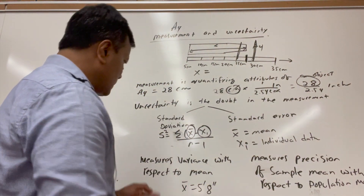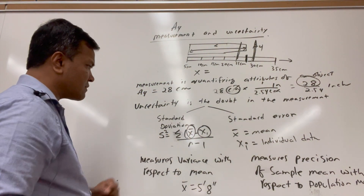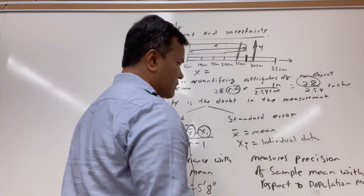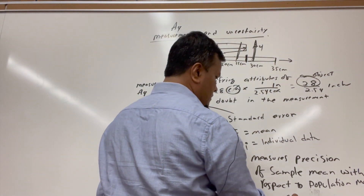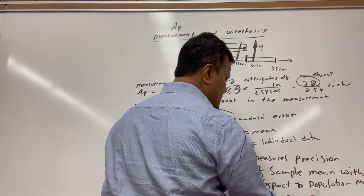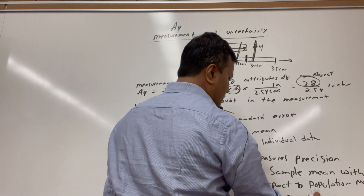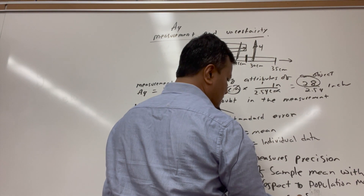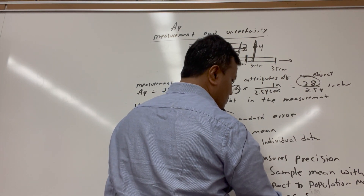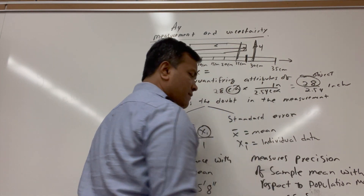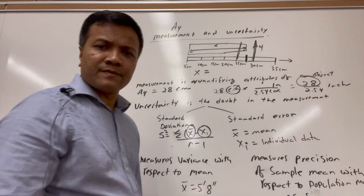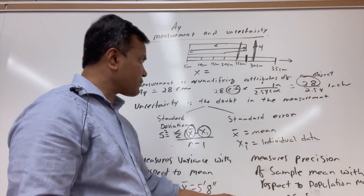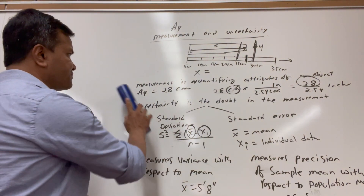So the standard deviation and the standard error: standard error equals standard deviation divided by the square root of n. That's it. Now let's consider the problem.